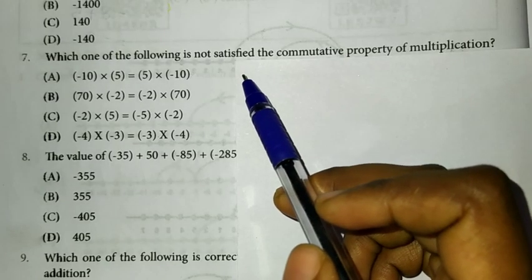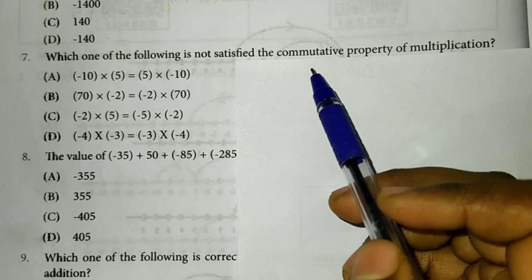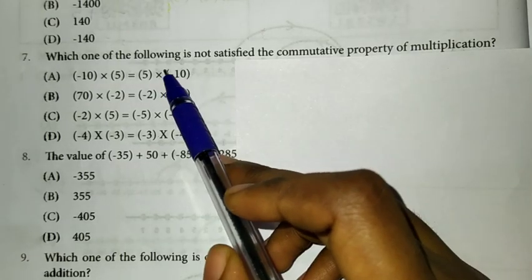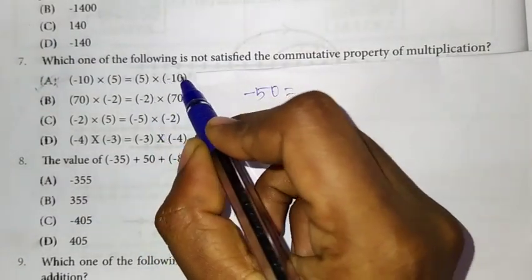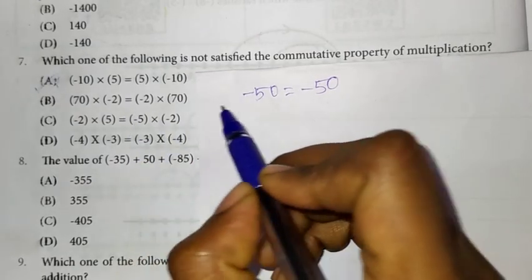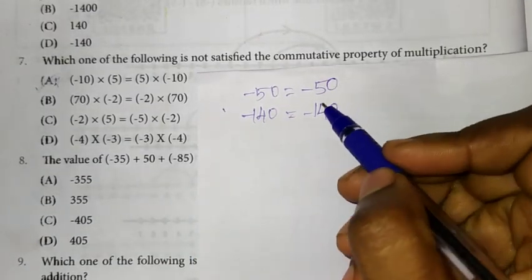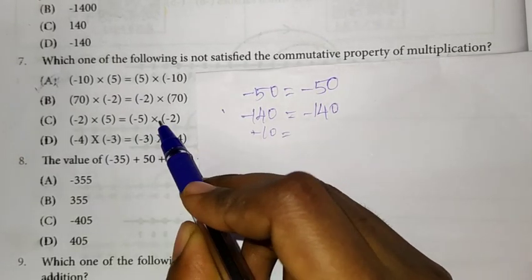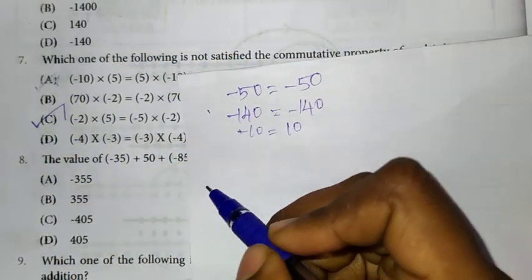Seventh question: which one of the following does not satisfy the commutative property of multiplication? The commutative property states that when two numbers are multiplied, the order does not affect the product. Option A: minus 10 into 5 equals minus 50, and 5 into minus 10 equals minus 50 — satisfies the property. Option B: 70 into minus 2 equals minus 140 on both sides — satisfies the property. Option C: minus 2 into 5 equals minus 10, but minus 5 into minus 2 equals plus 10 — does not satisfy. So option C is the answer.